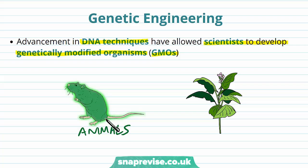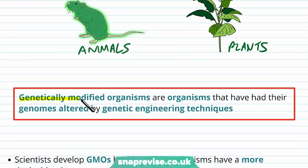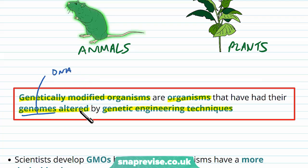Some animals that have been genetically modified include mice or rats, and we've got several examples of genetically modified plants that we use as well. A genetically modified organism is an organism which has had its genome altered by genetic engineering techniques. The genome refers to all of the DNA contained in that organism, and if we alter the genome using genetic engineering then we've genetically modified that organism.